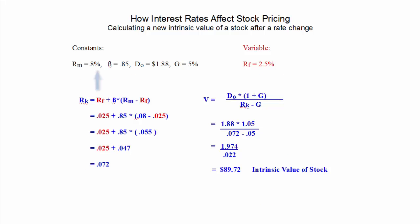Now here is an example. We are looking at a market return of 8%, beta at 0.85, which simply means that this particular stock moves a little bit less than the market moves. The dividend D0 is $1.88 annually and we are looking at a 5% growth rate on the dividend. We are using 2.5% as our risk-free interest rate variable, and you'll see on the left I have plugged in in red where we put that variable in each time, and it comes out with a required rate of return of 0.072. Now that is 7.2%. We take that and plug it into the dividend pricing model on the right, and we look at a $1.88 dividend with a growth rate of 5%, and we come down to an intrinsic value of the stock at $89.72.